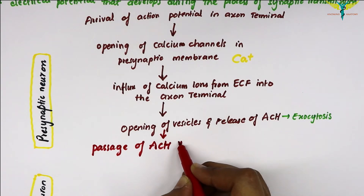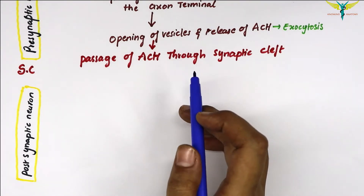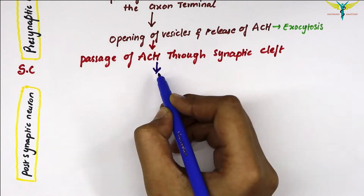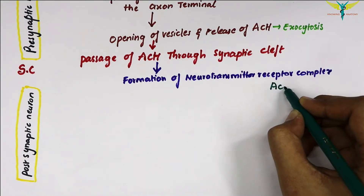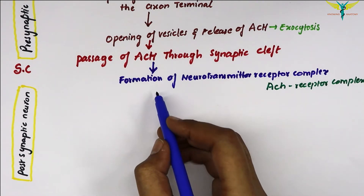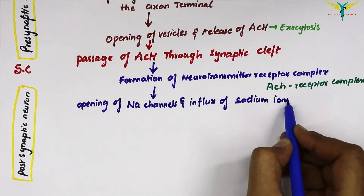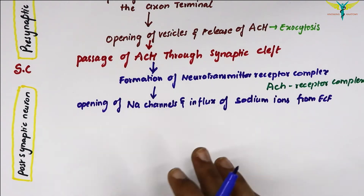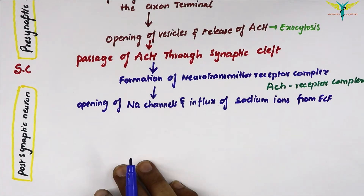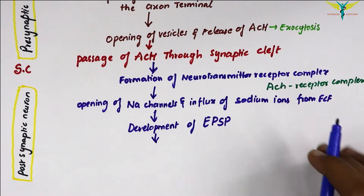The neurotransmitter binds with the receptor protein present in the post-synaptic membrane, forming a neurotransmitter-receptor complex — that is, the acetylcholine-receptor complex. After the formation of the acetylcholine-receptor complex, there is the opening of the sodium channels and the influx of sodium ions from the ECF, which causes production of the non-propagated EPSP, or excitatory post-synaptic potential, in the post-synaptic membrane. The common excitatory neurotransmitter at a synapse is acetylcholine.